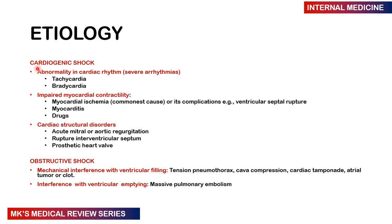For cardiogenic shock, causes include abnormalities in cardiac rhythm — either tachyarrhythmias or bradyarrhythmias; impaired myocardial contractility — where myocardial ischemia is the most common cause, along with complications such as ventricular septal rupture, myocarditis, and drugs; and structural cardiac disorders such as acute mitral or aortic regurgitation, rupture of the interventricular septum, and prosthetic heart valves. For obstructive shock, causes include mechanical interference with ventricular filling — as in tension pneumothorax, caval compression, cardiac tamponade, atrial tumor, or clot — or interference with ventricular emptying, as in massive pulmonary embolism.